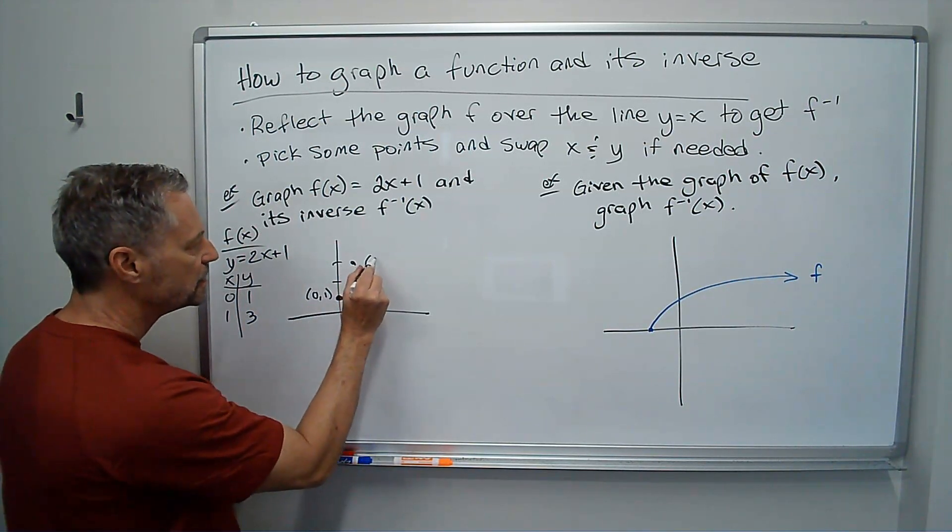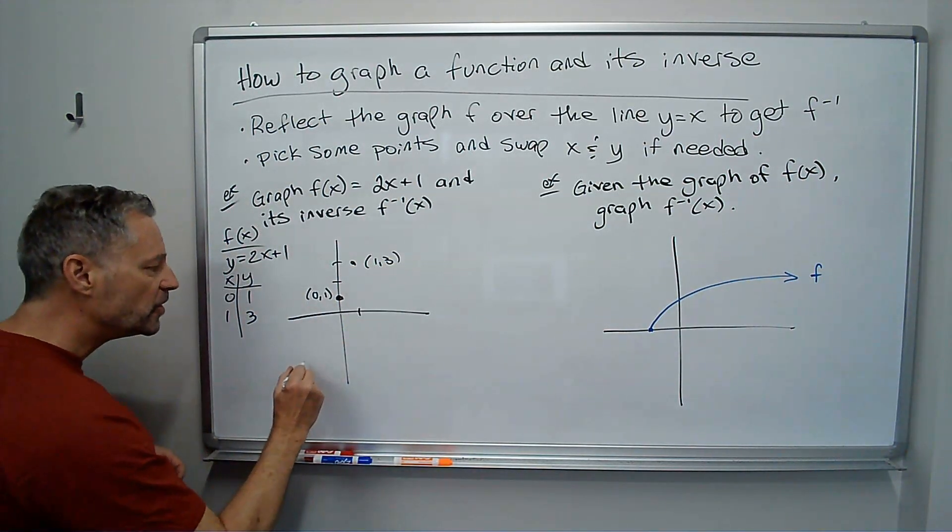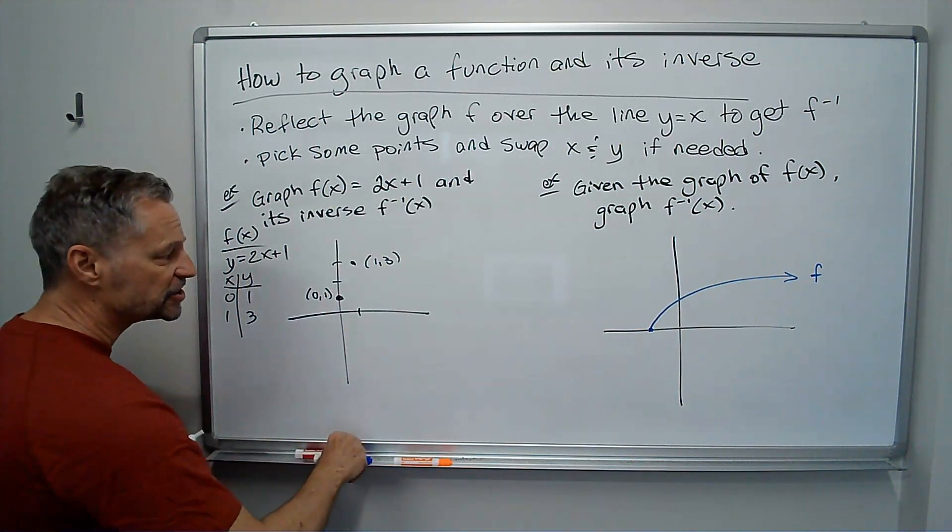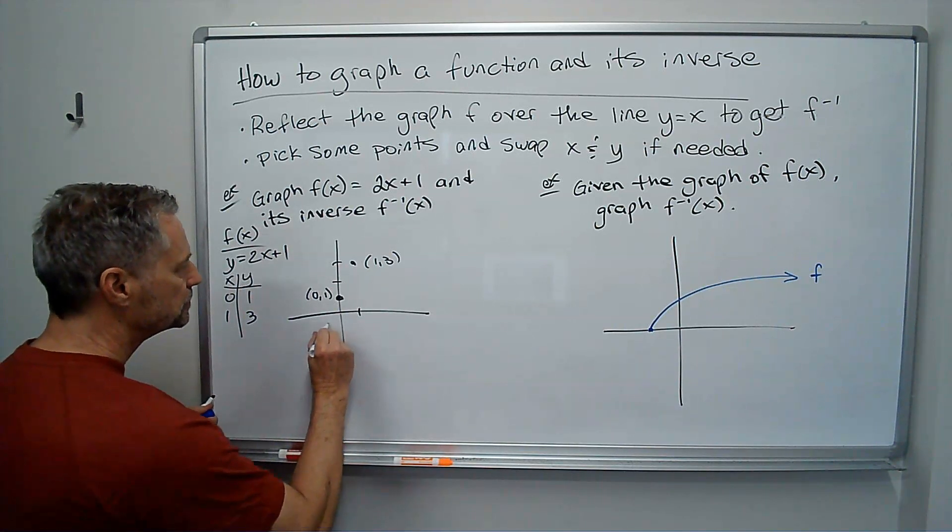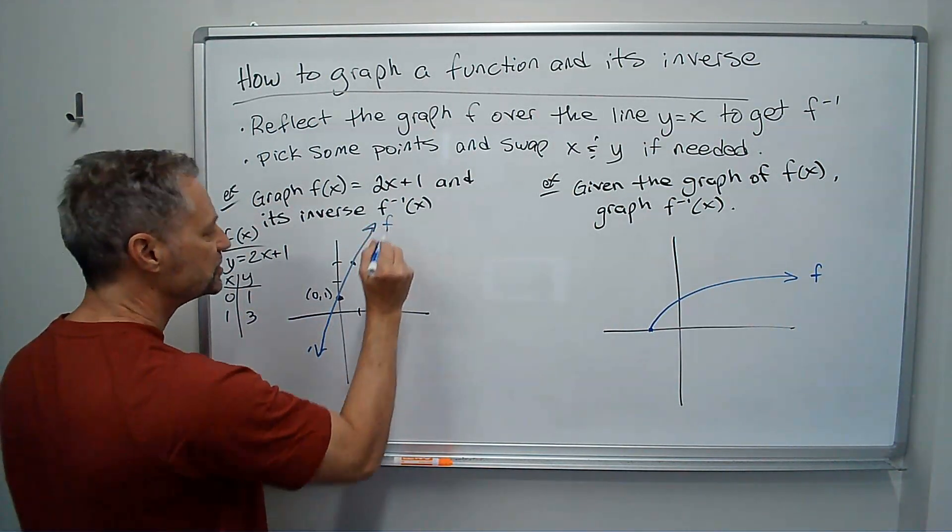So 0, 1, 1, 3. Those are on my original function. Let's graph that in blue. So here's my f function. There's f.